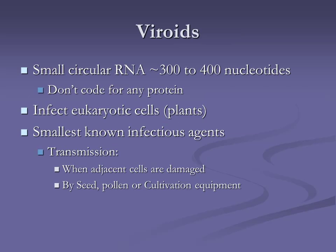Viroids are very small — about 300 to 400 nucleotides — and infect primarily plants. They are circular RNA, unlike plastids and bacteria which are circular DNA. Viroids can be very detrimental to plants and are transmitted through seeds and pollen. A practical example: invasive aquatic plants spread from lake to lake in the live wells of fishing boats in East Texas.